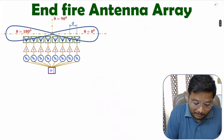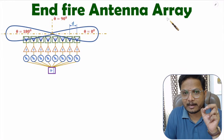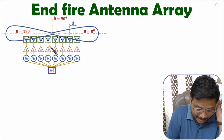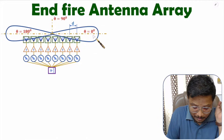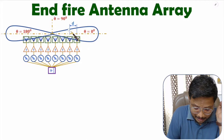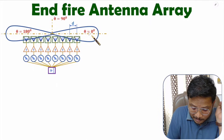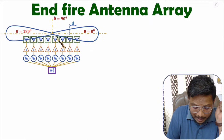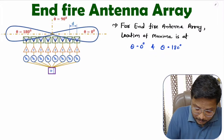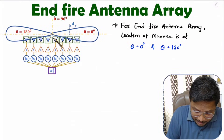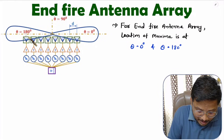First, if you talk about end-fire antenna array, then based on the name itself you can understand how radiation is happening. Here we have an antenna array arranged horizontally — this horizontal axis is the antenna axis. If you observe the radiation pattern, radiation happens at theta equals zero and at theta equals 180 degrees. So with end-fire antenna array, maxima location is at theta equals zero degree and theta equals 180 degree — meaning radiation happens along the axis of the antenna array.